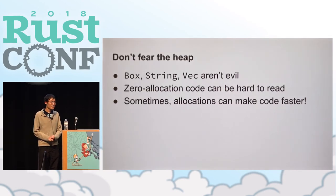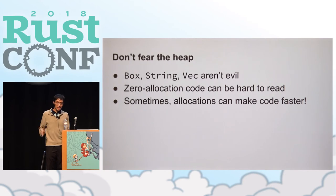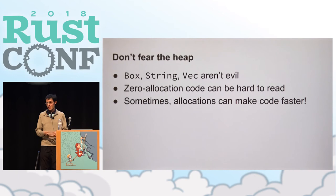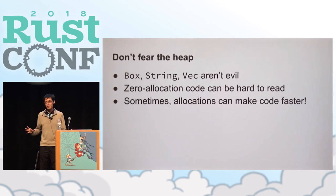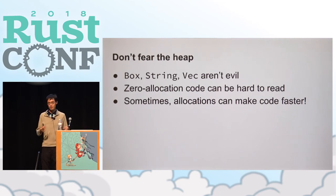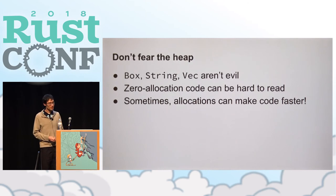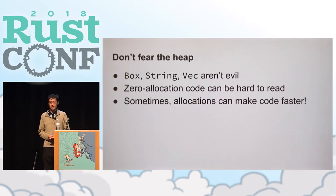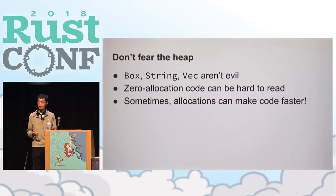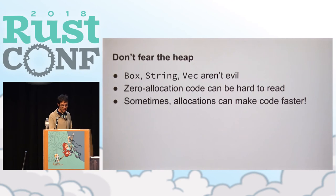Another piece of advice: don't fear the heap. By the heap I mean structures like Box, String, and Vec, which let you choose an arbitrary size for a particular data structure at runtime. Rust lets you avoid heap allocations altogether if you want to — but that doesn't mean you have to. Zero-allocation code can be much harder to read than equivalent code that does allocate, and without benchmarking it's hard to tell whether avoiding allocations actually makes your code faster.